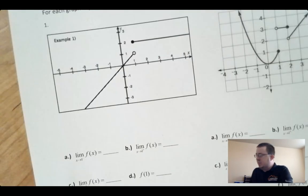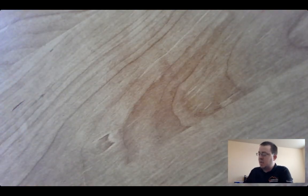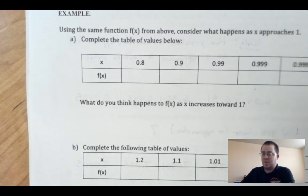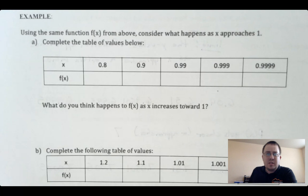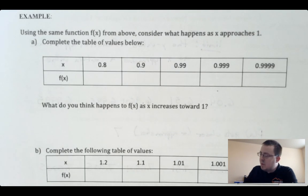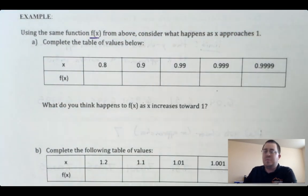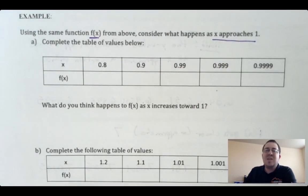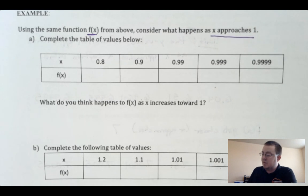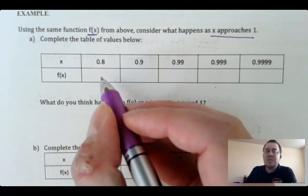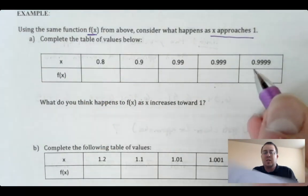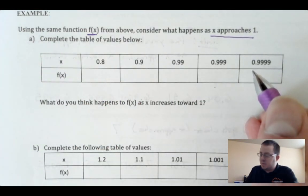Limits are pretty simple. Let's go ahead and see what can go wrong with some limits — what can be kind of weird and funky. I'm looking at the same function as above, but now I want to know what happens as x approaches 1. I'm going to fill up these tables pretty quickly and see what happens. Go ahead and check your values with me.